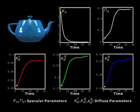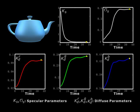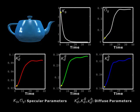Here we show a teapot rendered with the Prussian green oil paint, along with plots of the time-varying model parameters on the side. As KS decreases and Sigma-S increases, we see the dimming and diffusing out of specular highlights. In addition, along with the variations of the diffuse color albedos, an overall change in the color saturation and hue can be observed on the teapot.